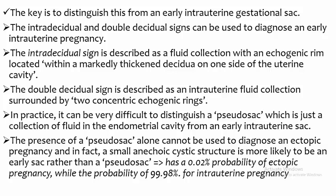In practice, it can be very difficult to distinguish a pseudo-sac from an early intra-uterine sac. The presence of pseudo-sac alone cannot be used to diagnose ectopic pregnancy. In fact, a small echogenic cystic structure is more likely to be an early sac rather than a pseudo-sac, with a 0.02 percent probability of ectopic pregnancy and a probability of 19.98 percent for intra-uterine pregnancy.